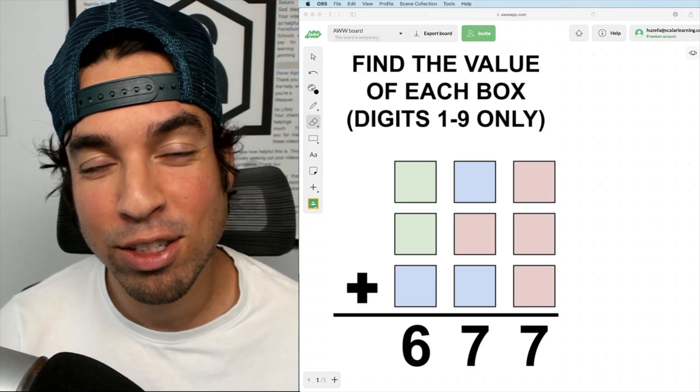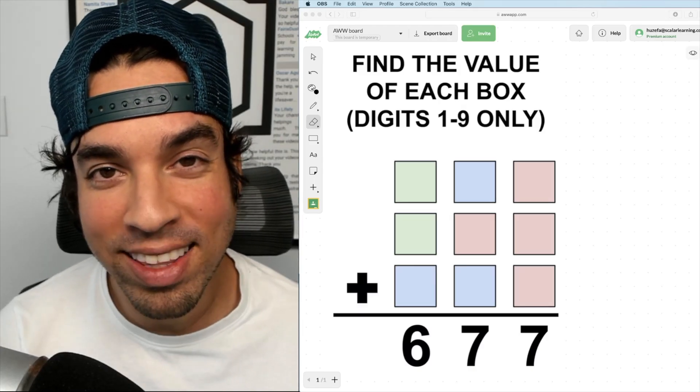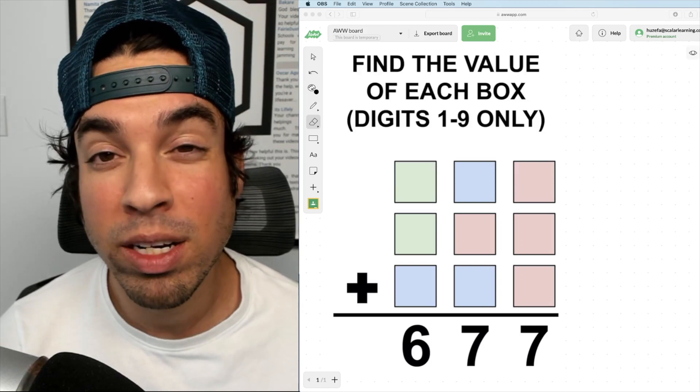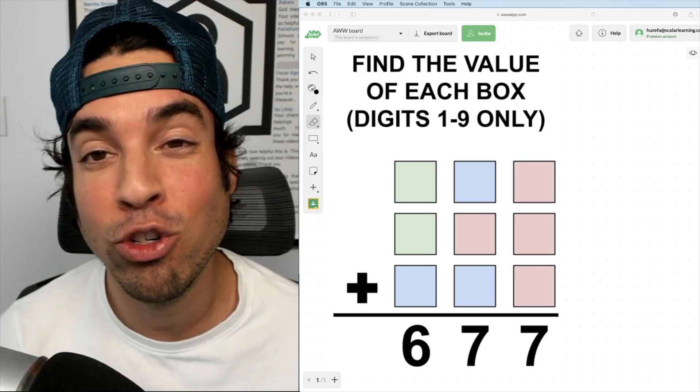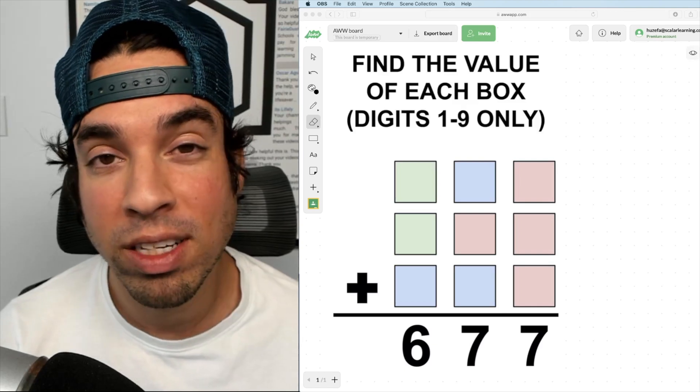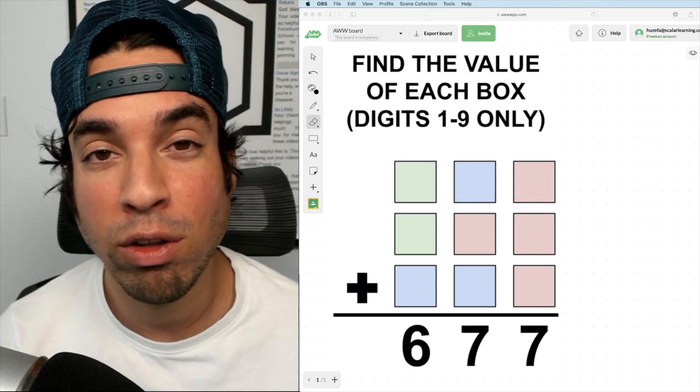What's up everybody and welcome back to another math puzzle. In this one we are asked to add three three-digit numbers to get 677, and each colored box represents a unique digit from one through nine.